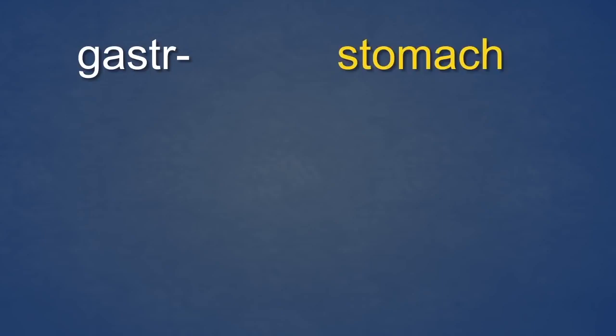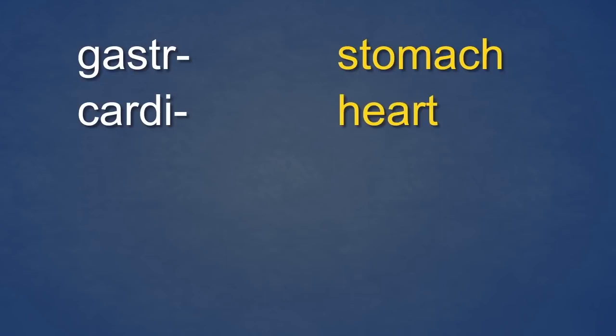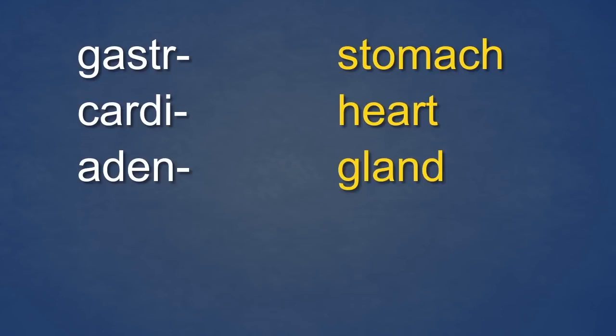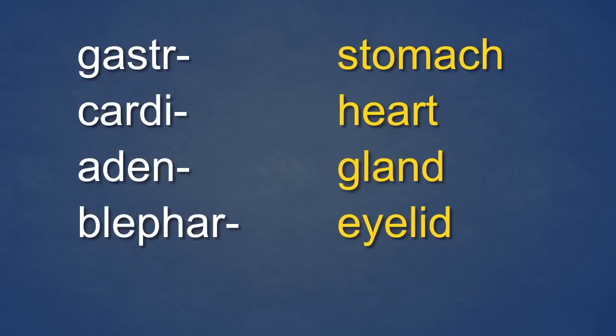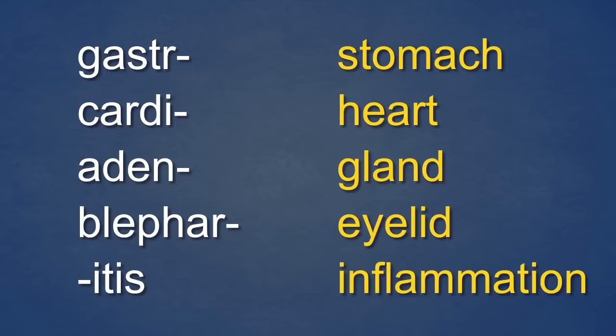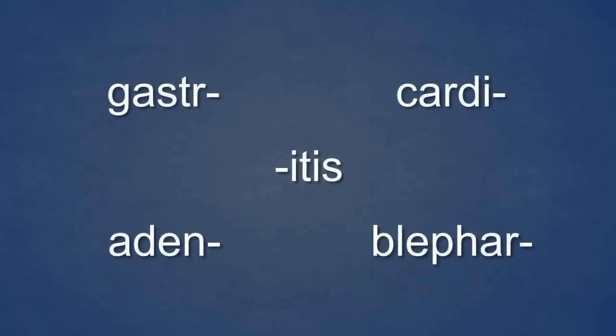Let's review the five elements you have just seen. Gaster sounds like gas truck and it means stomach. Cardi sounds like cards and it means heart. Aden sounds like a den and it means gland. Blephar sounds like blue fur and it means eyelid. Itis sounds like 'I test in flames' and it means inflammation.